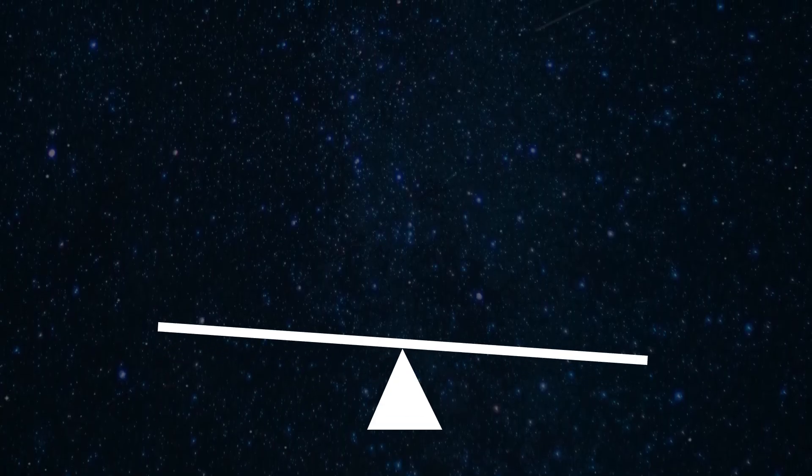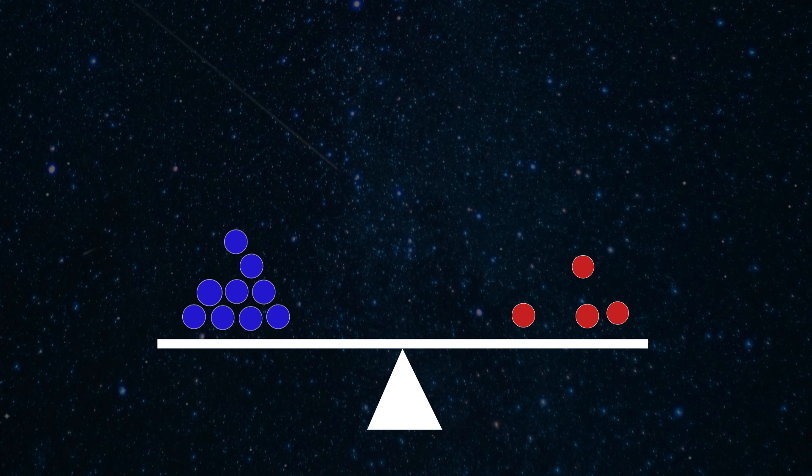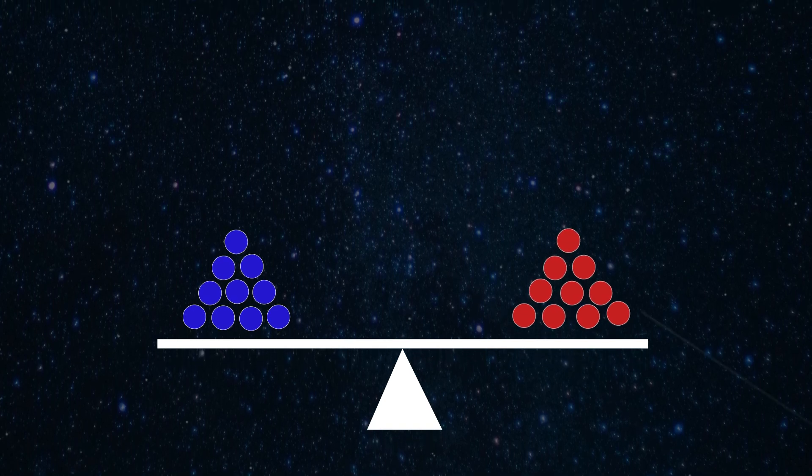If the universe had been perfectly symmetric, equal amounts of matter and antimatter created, then there would be nothing left but light. So why do we still see matter in our universe?